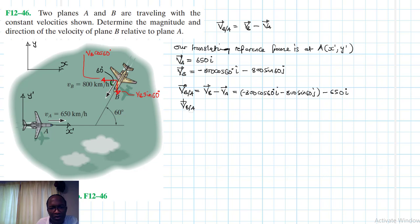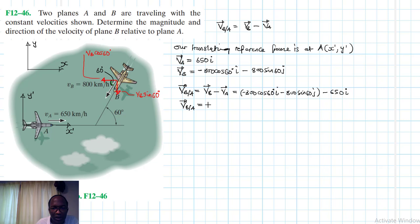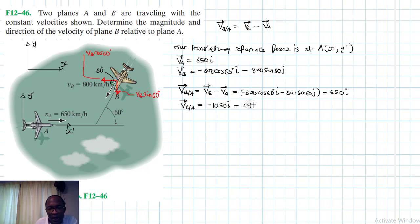Therefore VB/A — summing the like terms — we get negative 800 cos 60 minus 650, which gives us negative 1050 i, and then negative 800 sine 60 gives us negative 692.82 j.